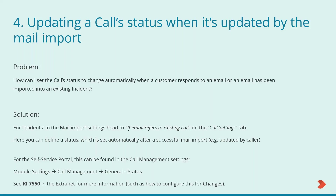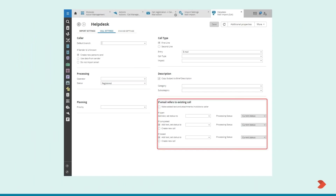This setting can be defined for open, completed, and closed incidents, so you can select it as you wish. I've included a screenshot on the next slide to show you where this is, but for more information — such as how to configure the automatic status update for requests for change — please see knowledge item 7550 in the extranet. And if you want to set this up for the self-service portal, it's pretty straightforward too. You just need to go to the Topdesk module settings, then to call management, then to general, and then set the status change you want if a call is modified, closed, or reopened.